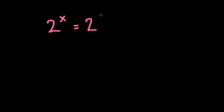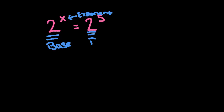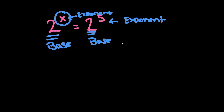We are going to start off looking at something very simple like 2 to the x equals 2 to the fifth. If we are solving an equation like this, note that this is called the base, and this is called the exponent. We need to find out what x is, and x is up here in the exponent position. Anytime we are solving for x and it is in the exponent position, we have a couple different ways we can solve it. We can look for a way to create the same base across our equation, or we can use logarithms. In this particular lesson, we are going to simply solve it using the same base.